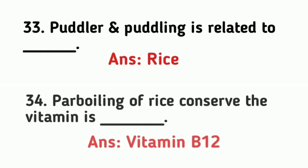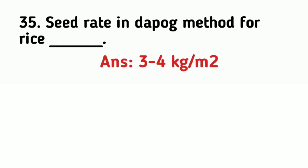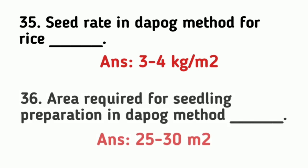Parboiling of rice conserves vitamin B1. The seed rate in the DAPOG method for rice is 3 to 4 kg per meter square. The area required for seedling preparation in the DAPOG method is 25 to 30 meter square.